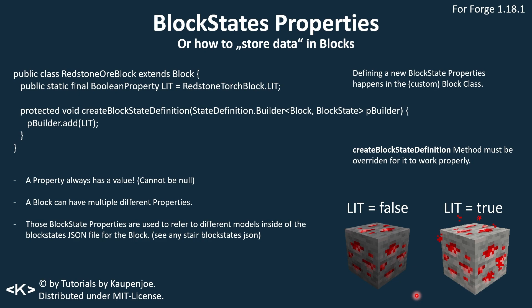You have to use a block state property — you can't just add a plain Boolean variable to the block, because this redstone ore block is only created once. If you had a plain Boolean instead of a Boolean property, what would happen is that every redstone ore block in the world would light up at the same time. The difference is that the block state property is only applied to the particular block state, the particular block in front of you, and not all of the ones that have the same type.